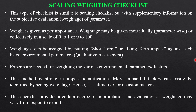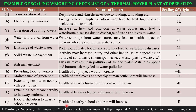The weighting checklist is strong in impact identification — more impactful factors can easily be identified by examining the weightage, making it very attractive for decision makers. However, it provides a certain degree of interpretation variability because weightage may vary from expert to expert. In the thermal power plant table, L or S is used to denote long term or short term impact.